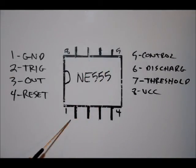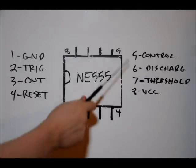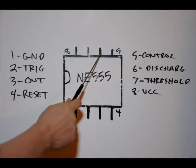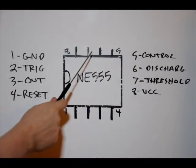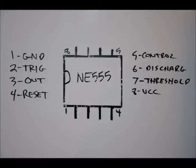So pin 1 is our supply ground, our DC ground. Pin 2 is our trigger pin. Pin 3 is our output pin. Pin 4 is our reset pin. Pin 5, control. Pin 6, discharge. Pin 7, threshold. And pin 8 is our VCC, which is our power supply line.